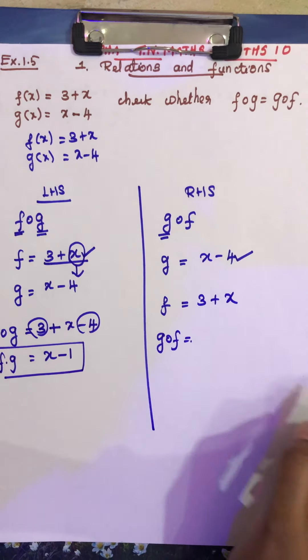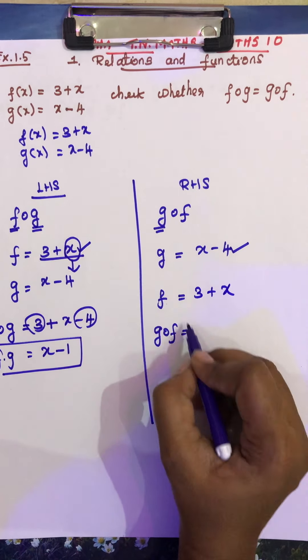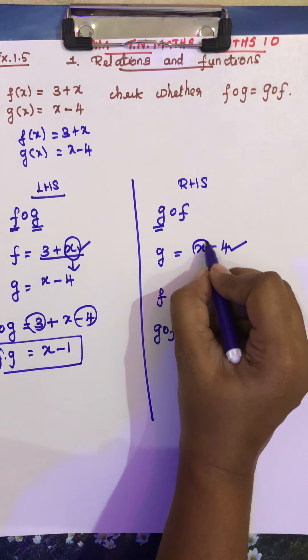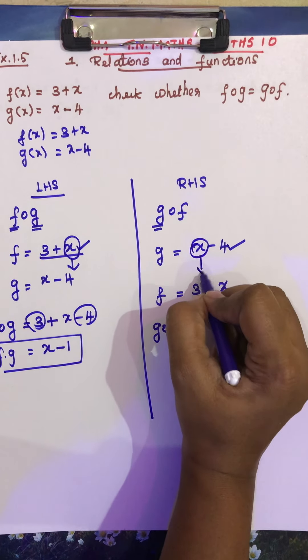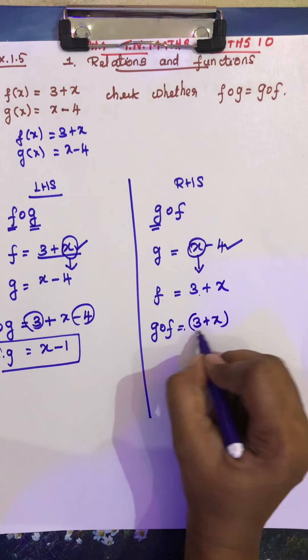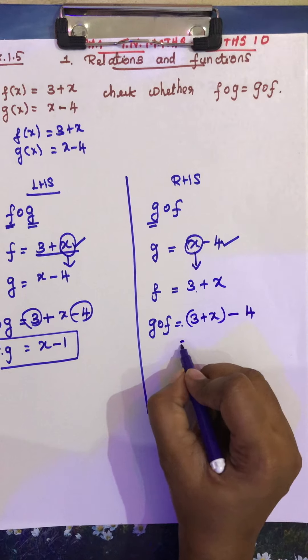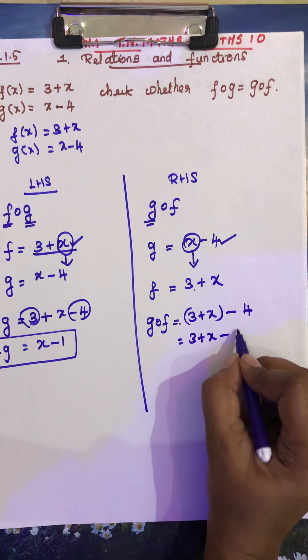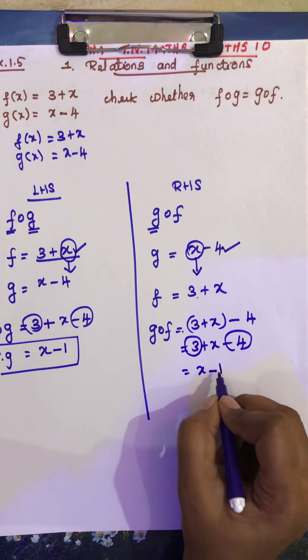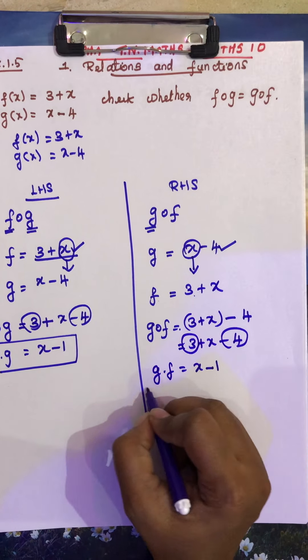Okay students, see now what we are doing, g f. First man all function, here is x. First step, so this is 3 plus x minus 4. So this is plus 3 minus 1, so you get x minus 1. This is g dot f.